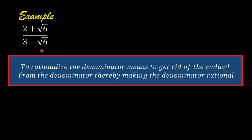To get rid of the radical from the denominator here, we must multiply 3 minus square root of 6 by its conjugate.